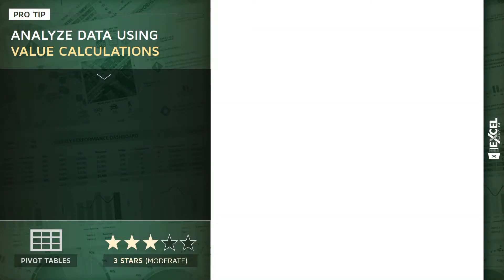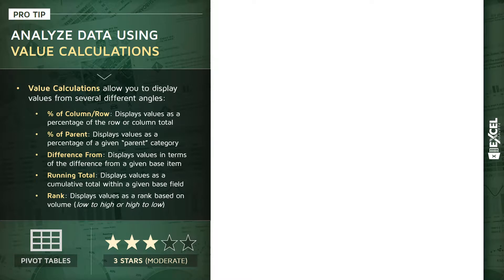Let's talk about one of the most useful and powerful pivot table tools: analyzing your data using value calculations. In a nutshell, value calculations allow you to display underlying raw values from all sorts of different angles. So instead of just displaying a standard sum, count, or average, you can show those value-based fields in very interesting ways, like the percent of a given column or row, or the percent of a given parent category.